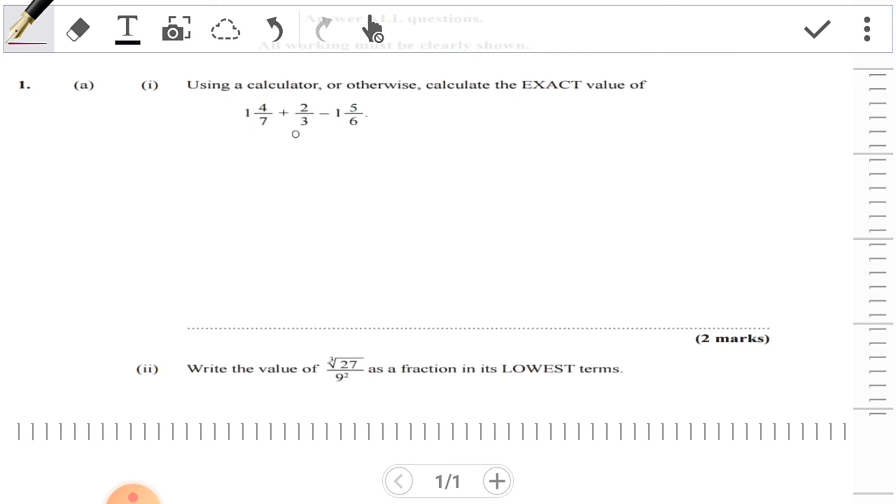Let's go: 7×1=7, plus 4, that's 11/7, plus 2/3. We're going to minus: 6×1=6, plus 5, that's 11/6.